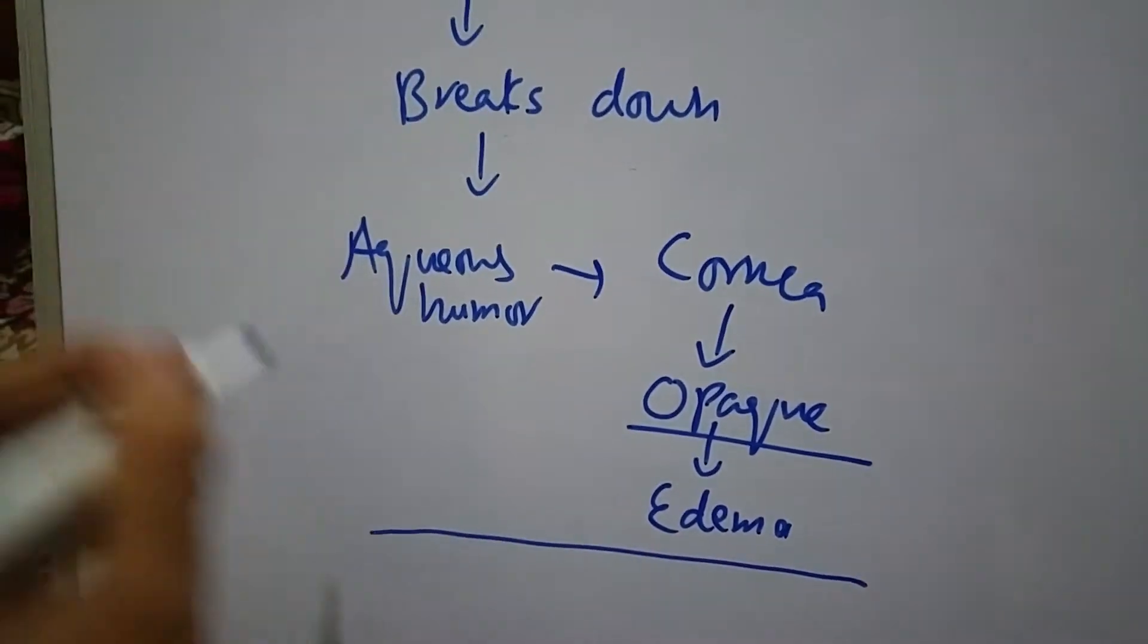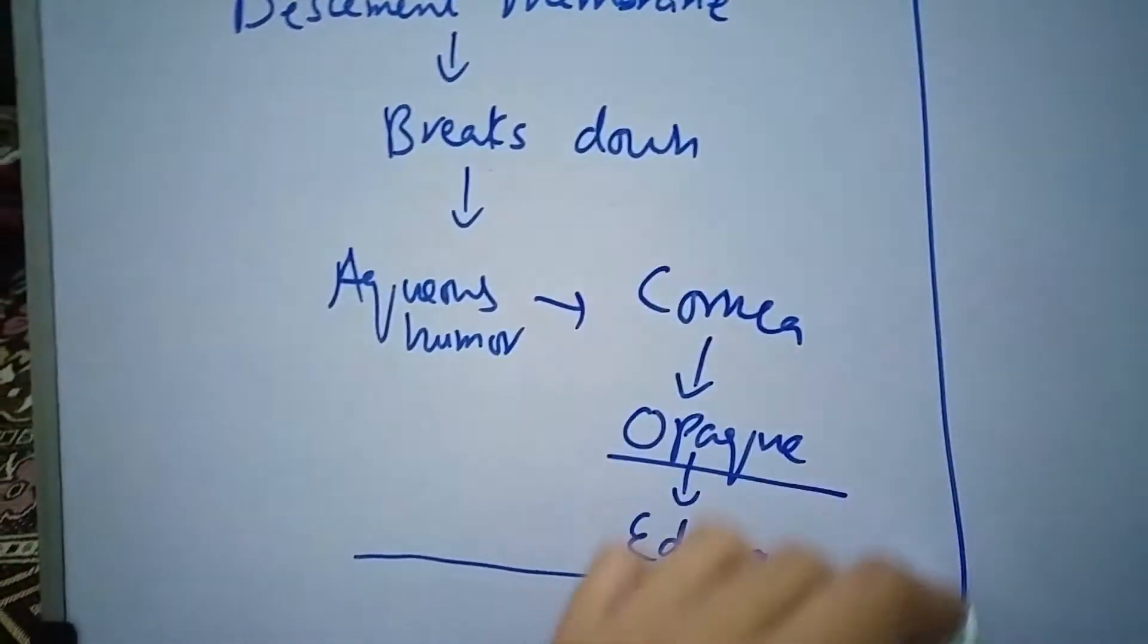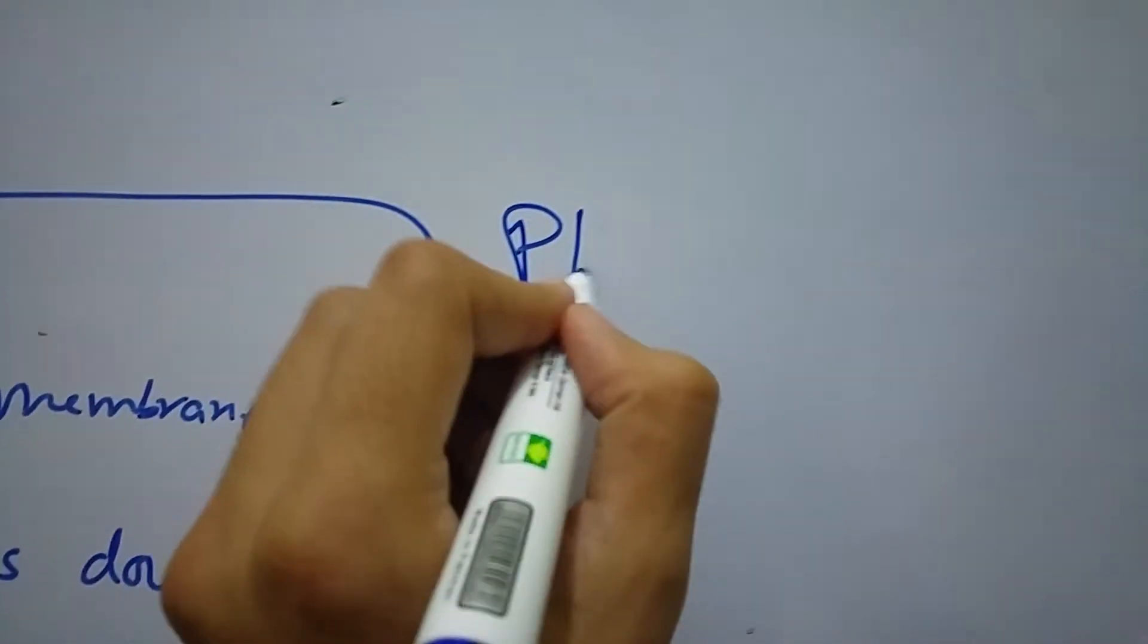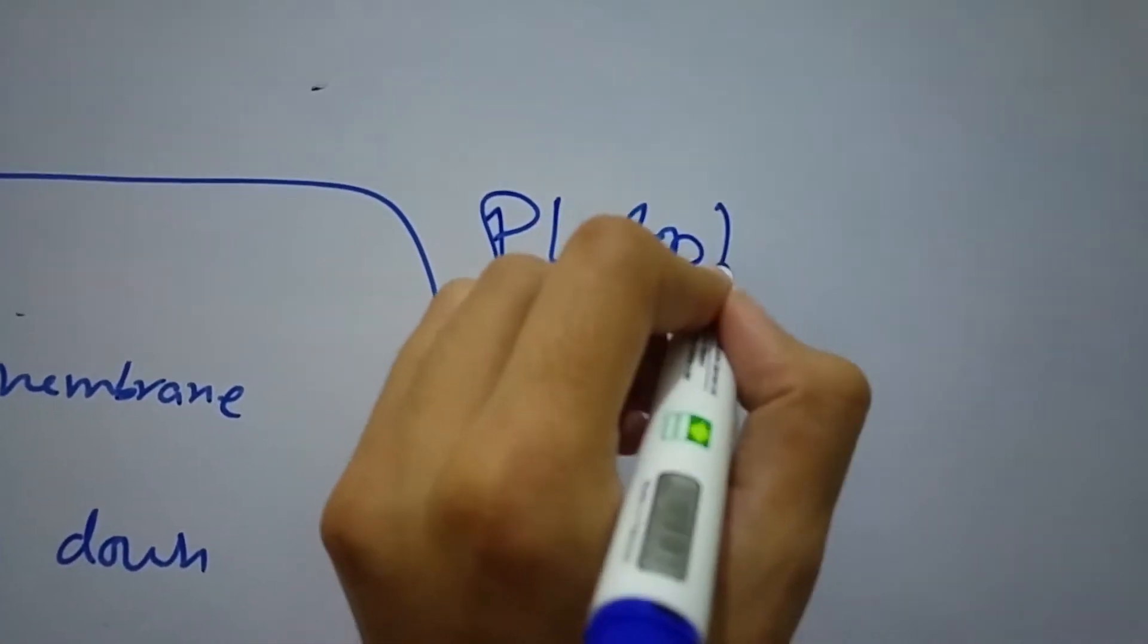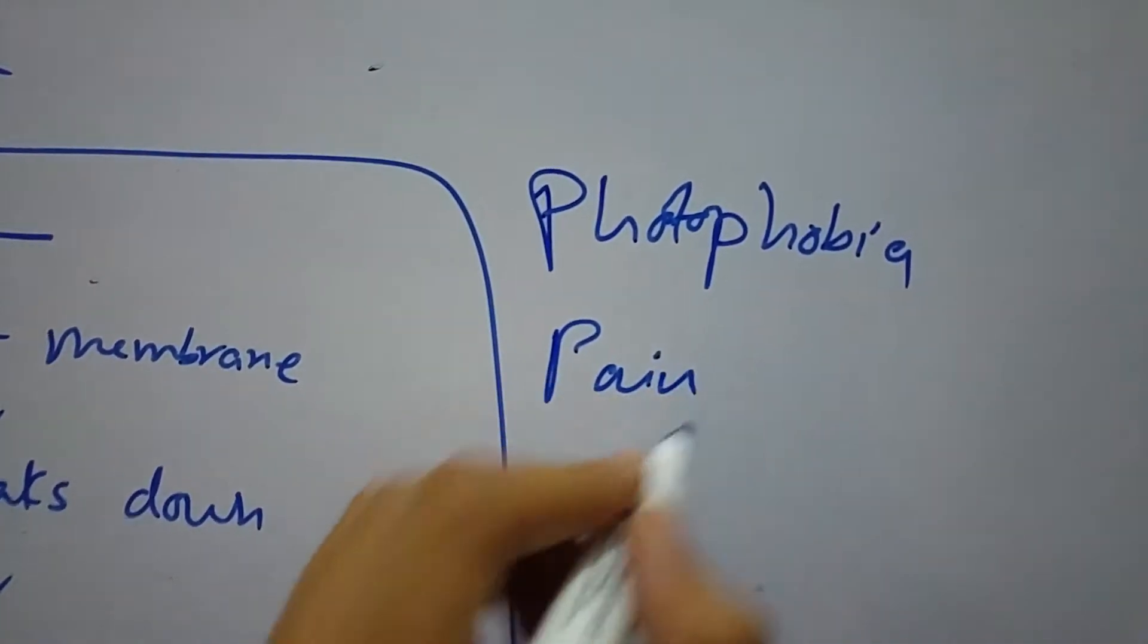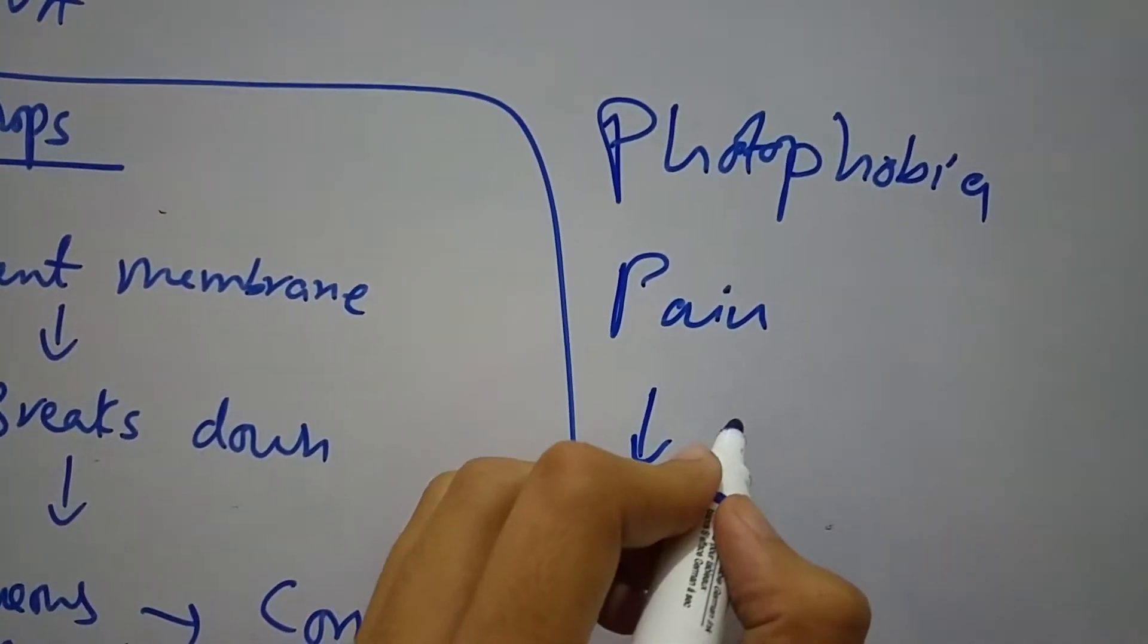In this case of acute hydrops, the patient reports photophobia, pain, and decreased visual acuity.